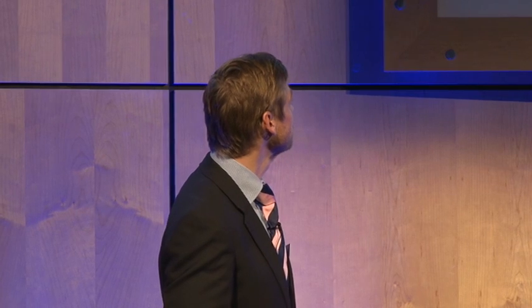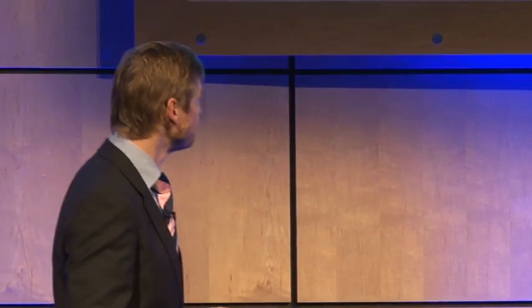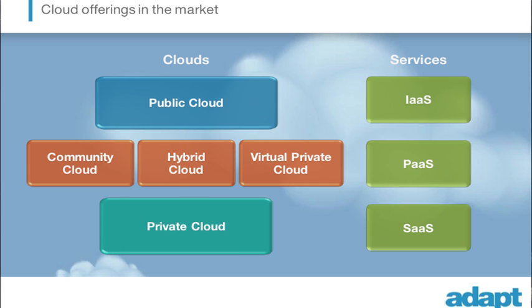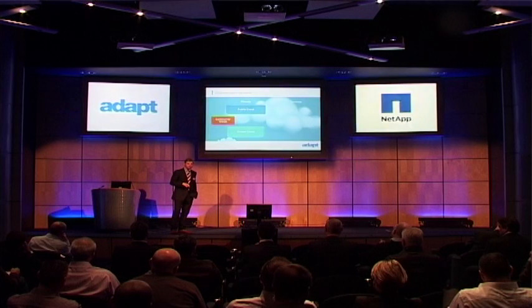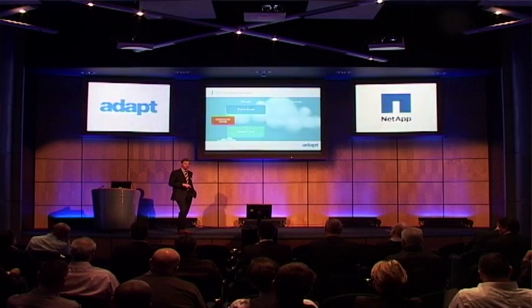So the first one is the community cloud, which isn't really widely used. Does anybody know what a community cloud is? So a community cloud is where like-minded organizations — and this mostly happens in the public sector — club together and they build their own cloud infrastructure. The peaks and troughs are balanced across a bigger user group. So the whole IT shared services model in the public sector is pretty much based on community clouds.